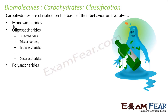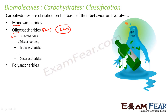Mono means one, which cannot be further broken by hydrolysis. Oligo means few — it can be broken into two to ten units. So if it breaks into two units it's called disaccharides, three units is trisaccharides, tetrasaccharides, and so on up to decasaccharides for ten units. If it breaks into more than ten units, we call it polysaccharides. This classification is all based on behavior during hydrolysis.